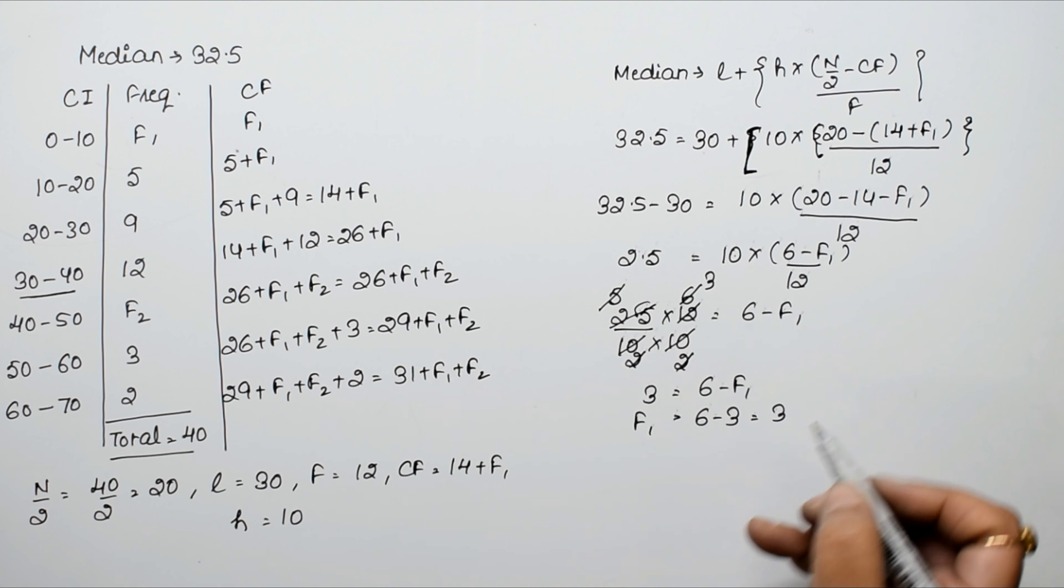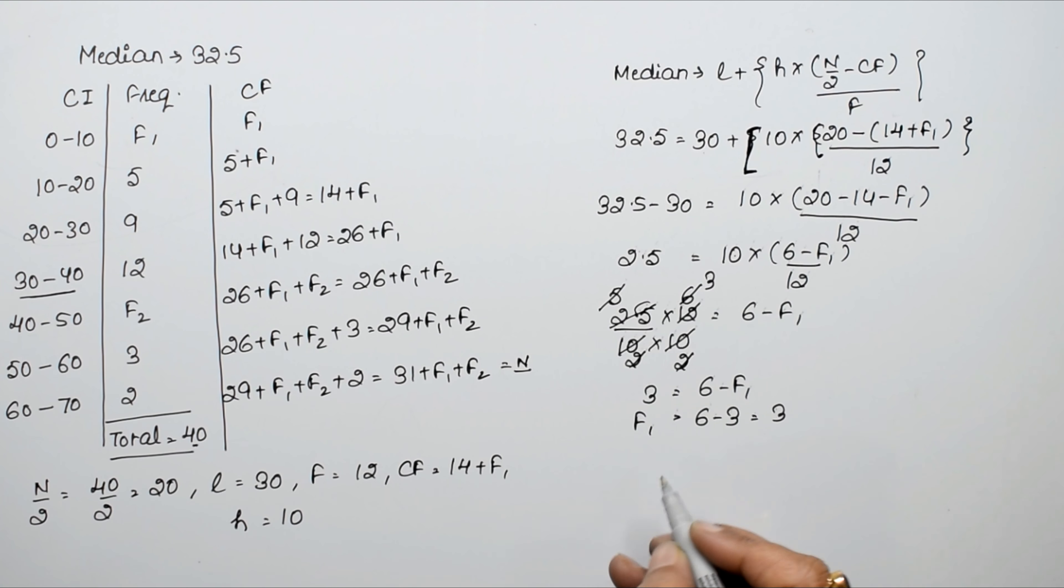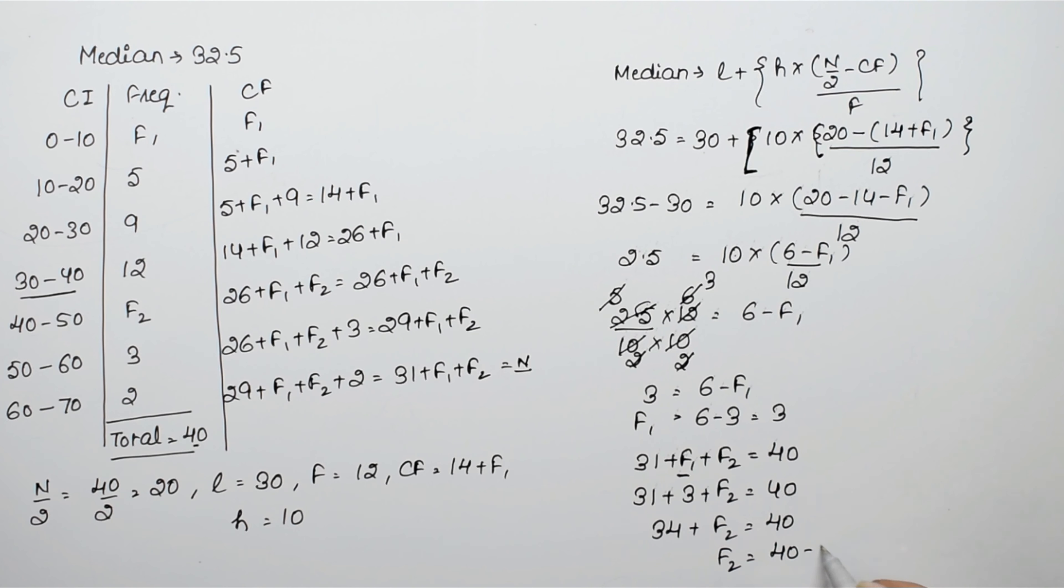Now for F2, we know that N equals 40. So we can write 31 plus F1 plus F2 equals 40. F1 value is 3, so 31 plus 3 plus F2 equals 40. That's 34 plus F2 equals 40. So F2 equals 40 minus 34, that is 6.